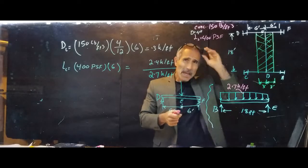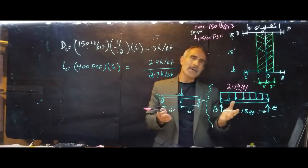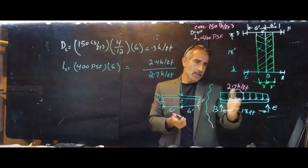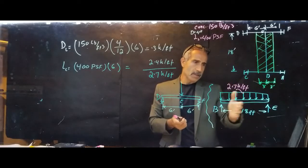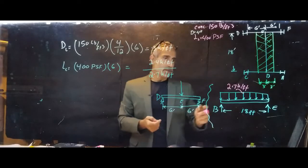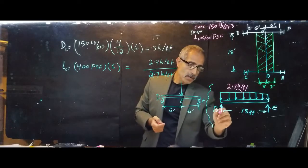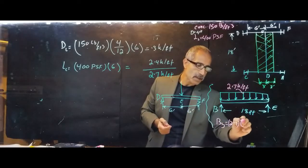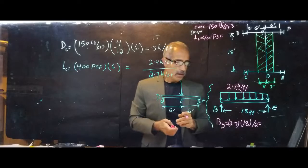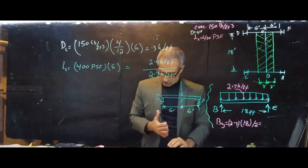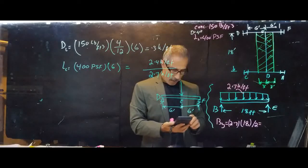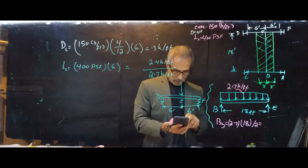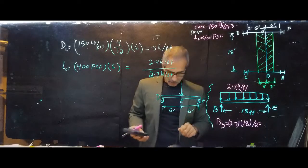That's where it came from. All right, so now we know the distributed load here. We're going to find these reaction forces. This is a simply supported beam and it's pretty uniform. I don't have to go ahead and do summation of moments about one point to calculate. You can just say, okay, this is going to be down the center and each corner is going to carry half the load. So By is going to be 2.7 multiplied by 18 feet and divide that by 2.